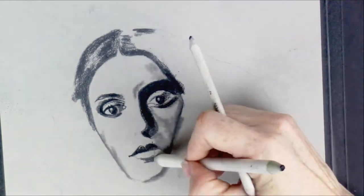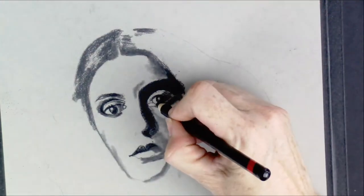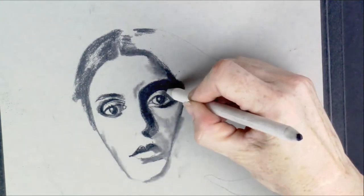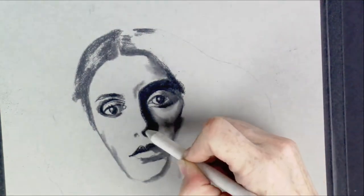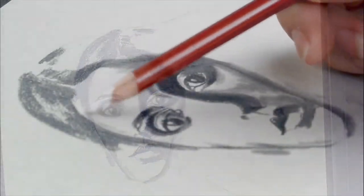For this area now, I'm using the larger blending stump, and you will notice that I'm using the charcoal that's already in the image to push some of these shadows in.